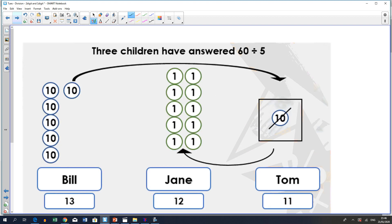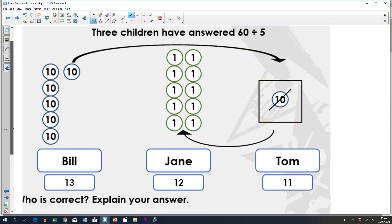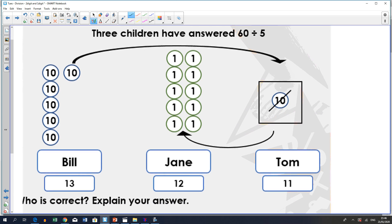Now, if we move on to the next question, we see here three children have answered 60 divided by 5. Now, here you can see Bill, he says 13, Jane says the answer is 12, and Tom says the answer is 11. Now, there's a picture here and a diagram to show you how they have worked this out.